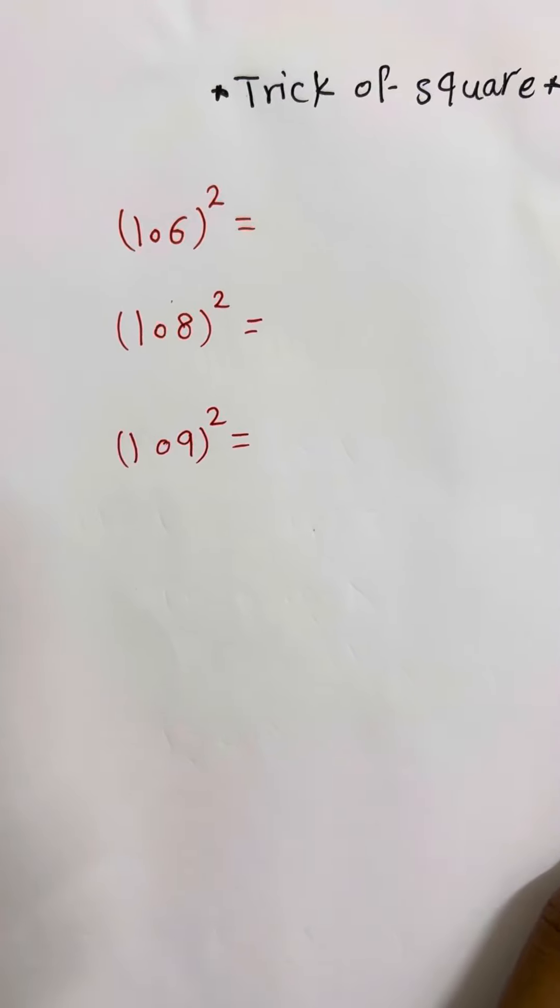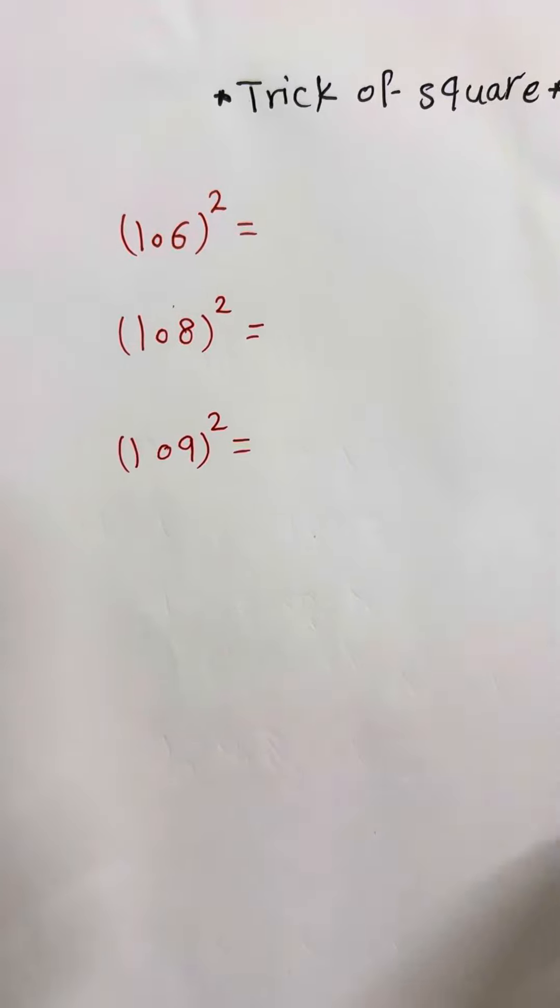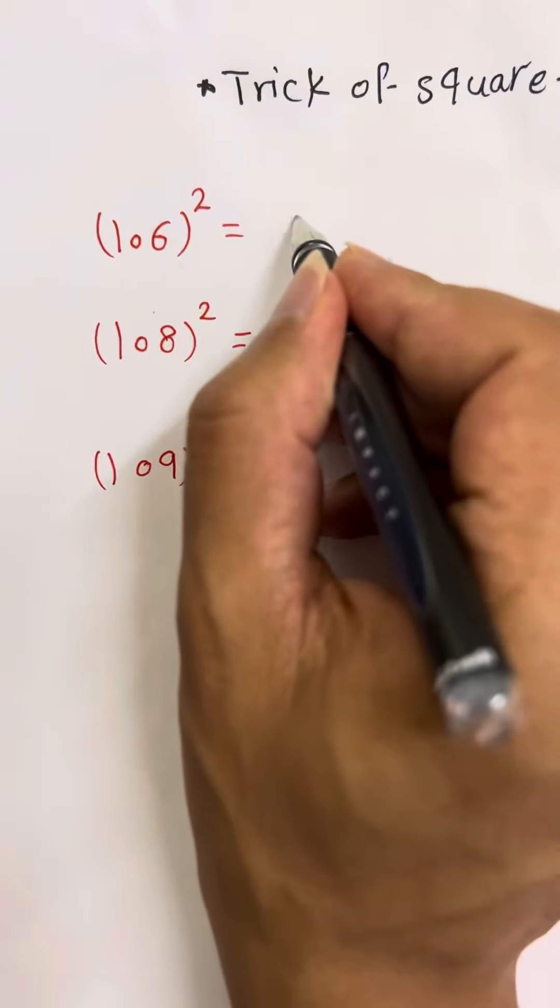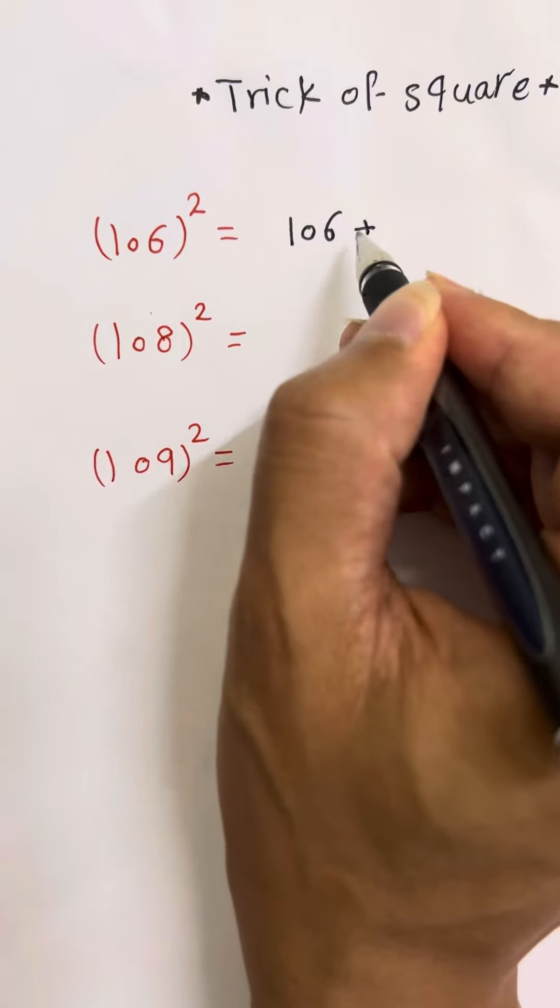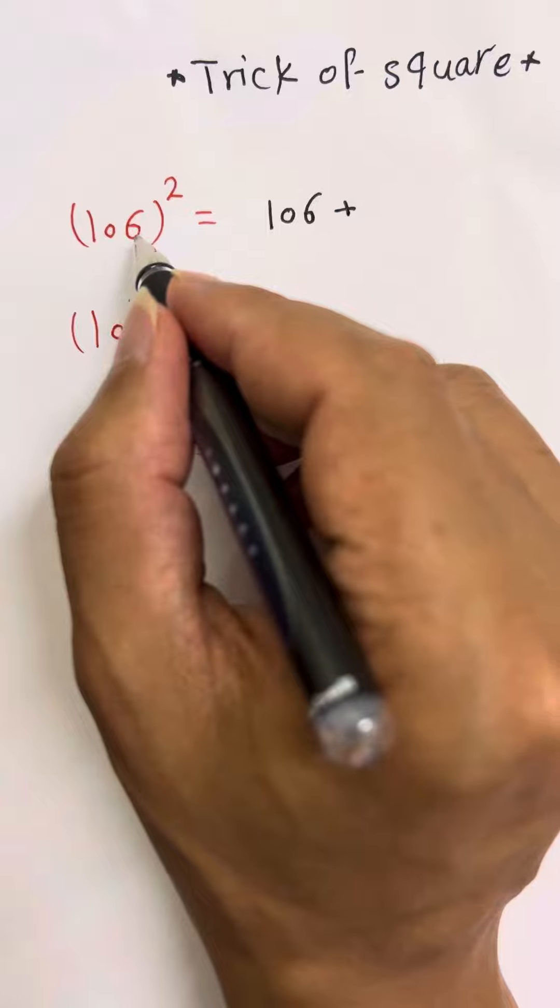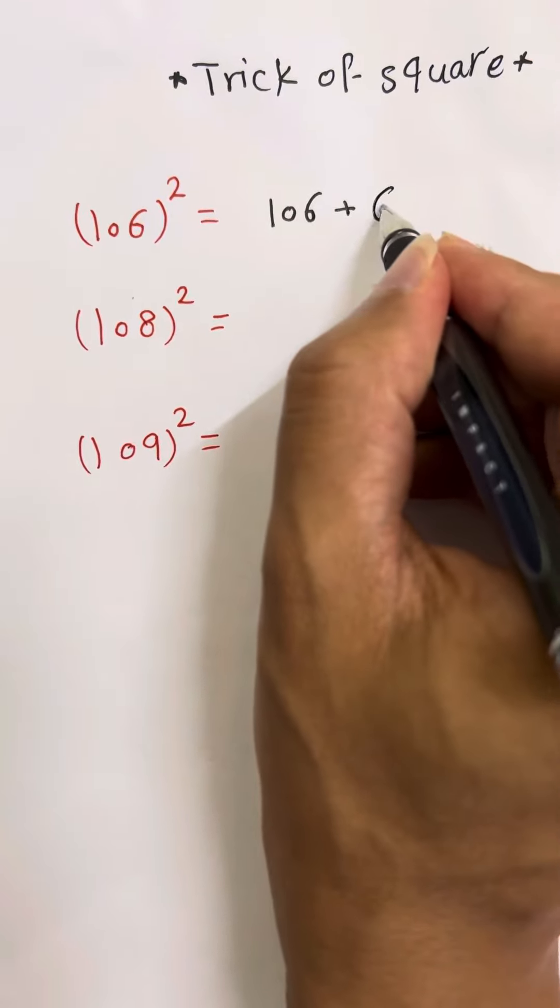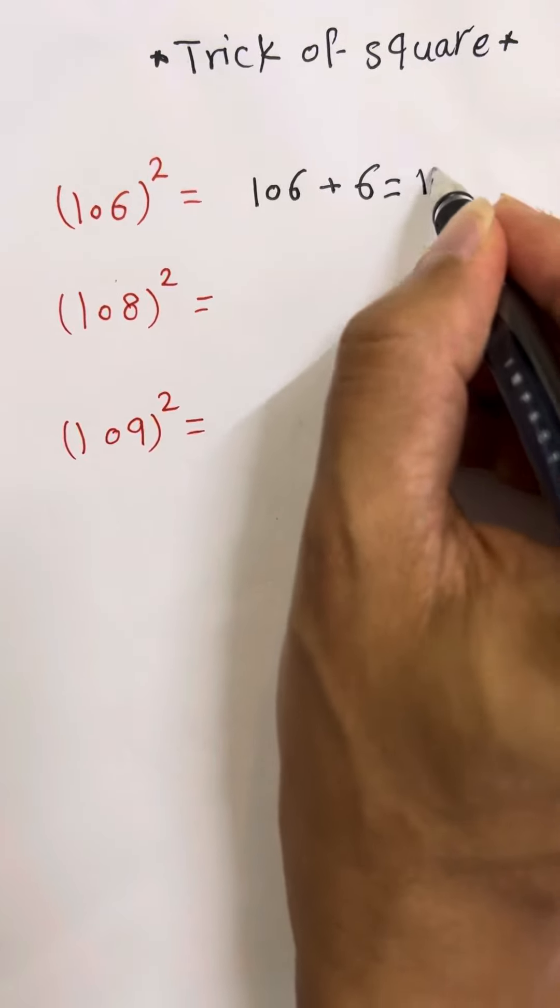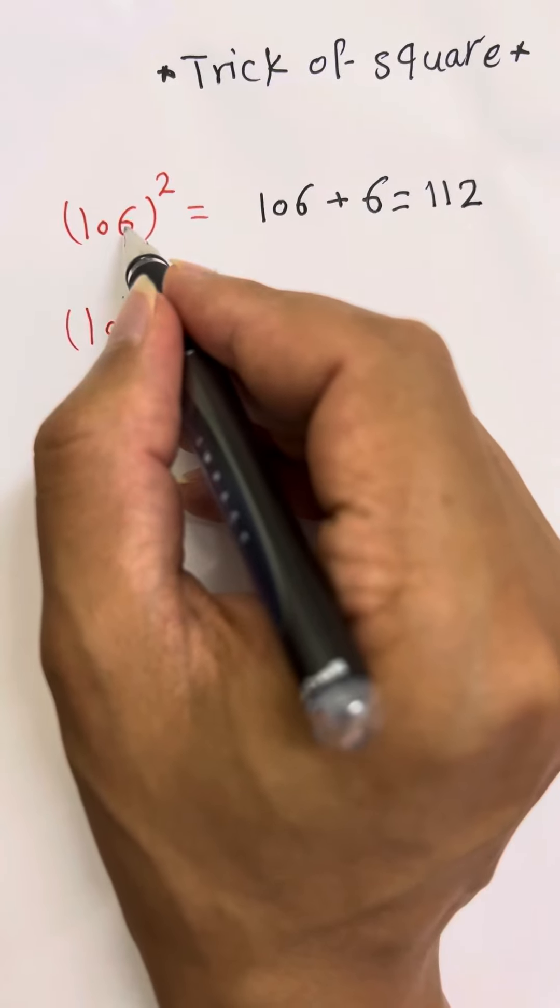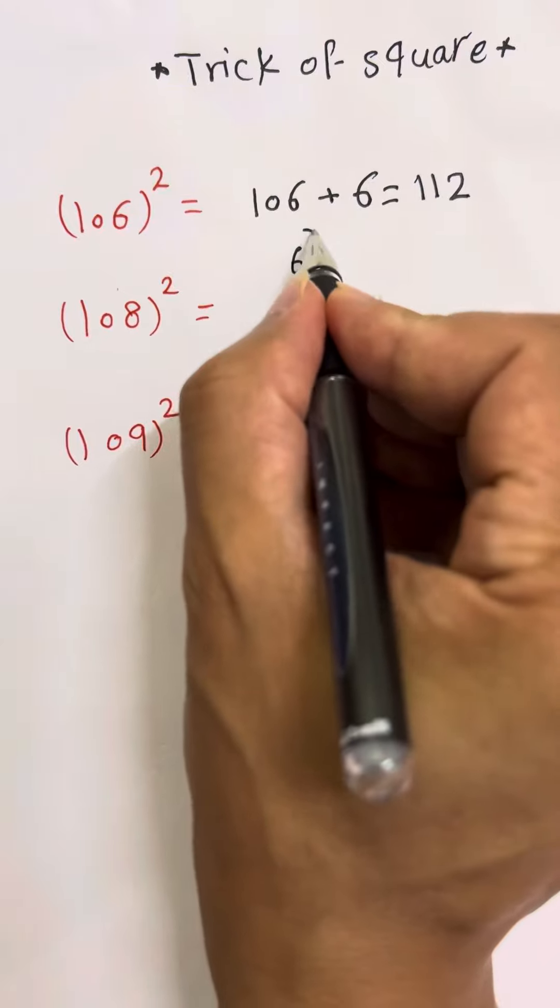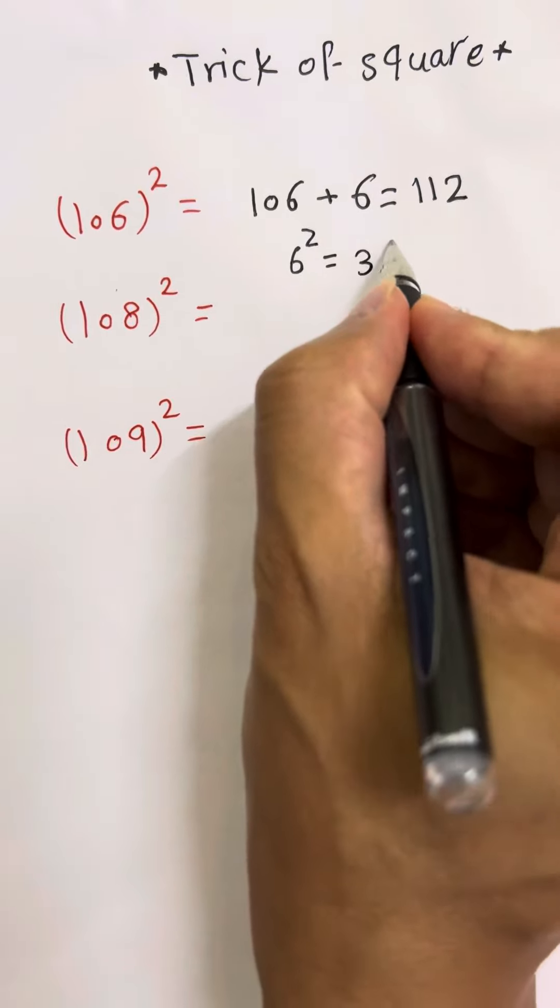Let's start. How can you find it without using a calculator? First step, you put the number same as 106. Then, you are going to add this 6 here. Add them together: 106 + 6 = 112. After that, the first number from the right is 6. 6² = 36. Put it here. That's the final answer: 11236.